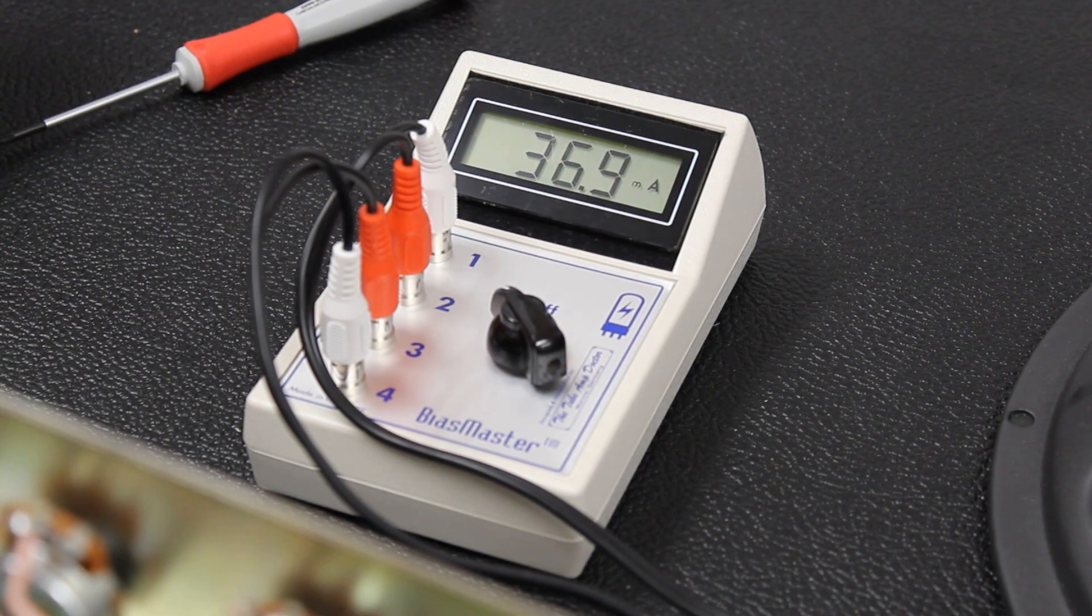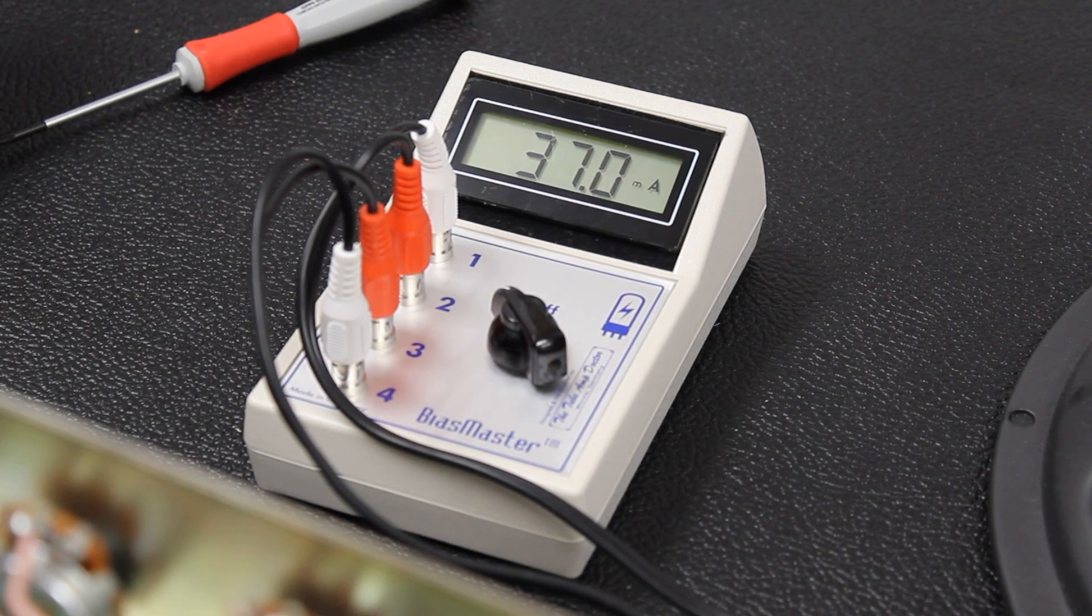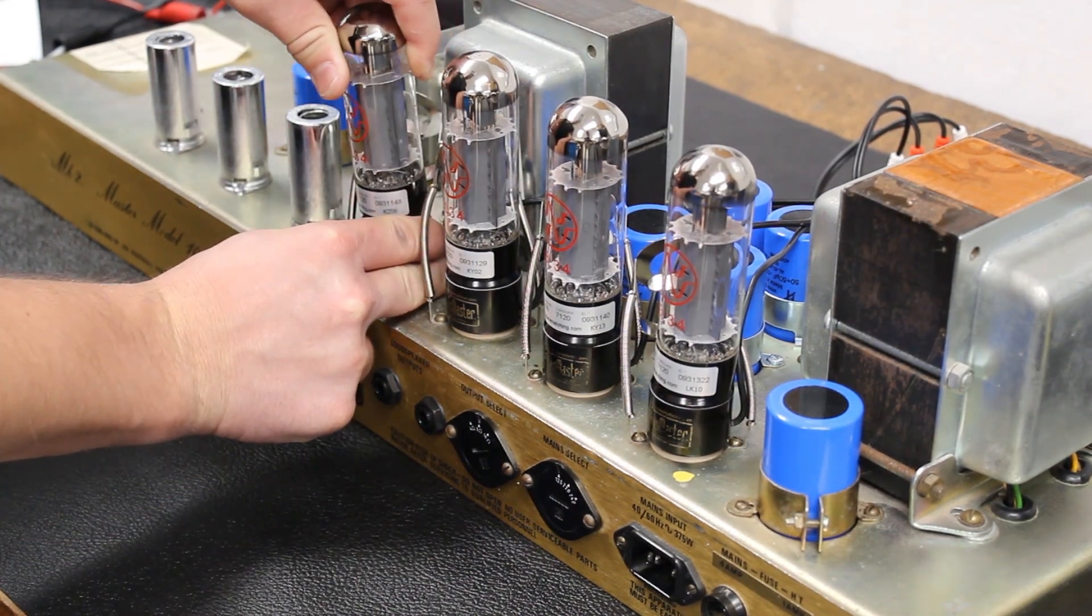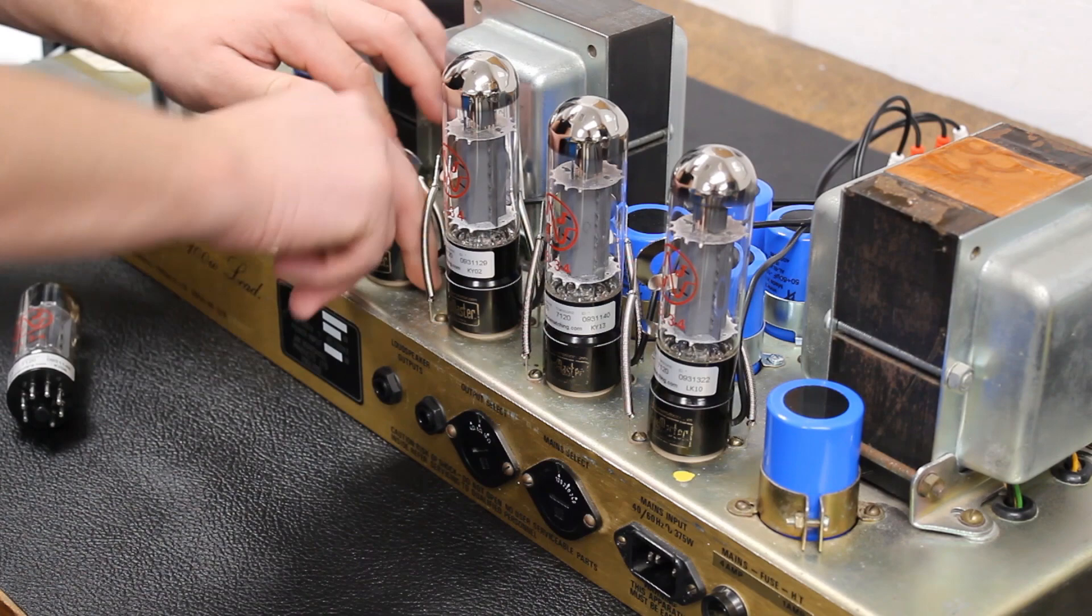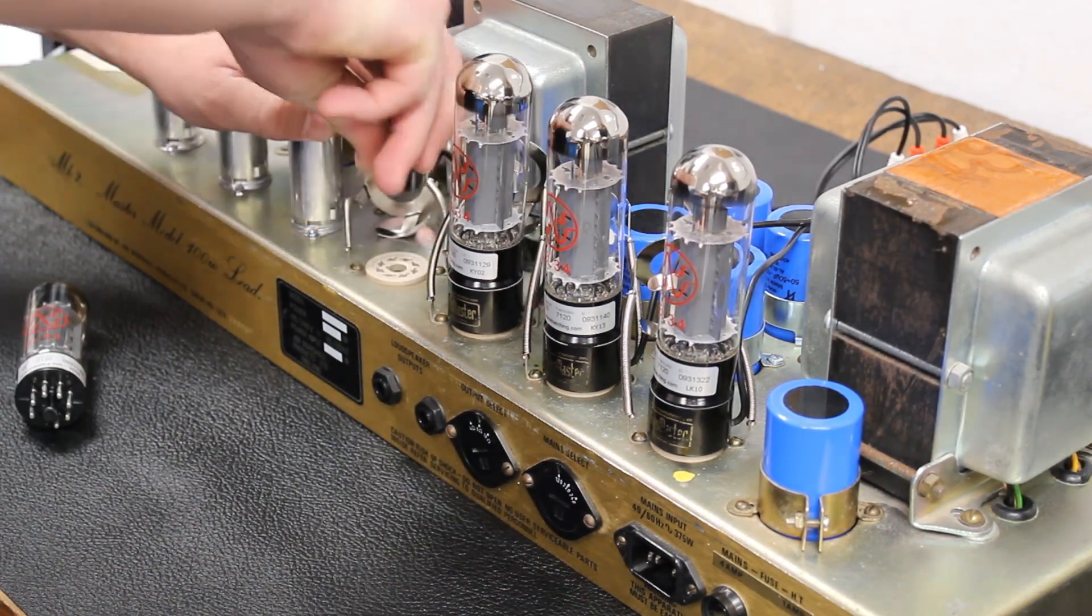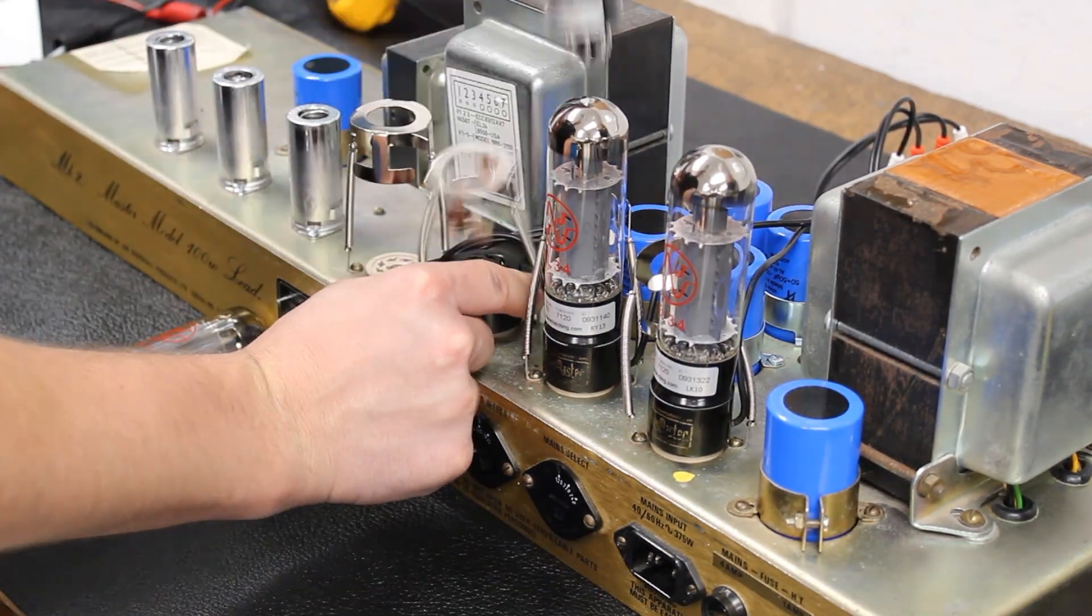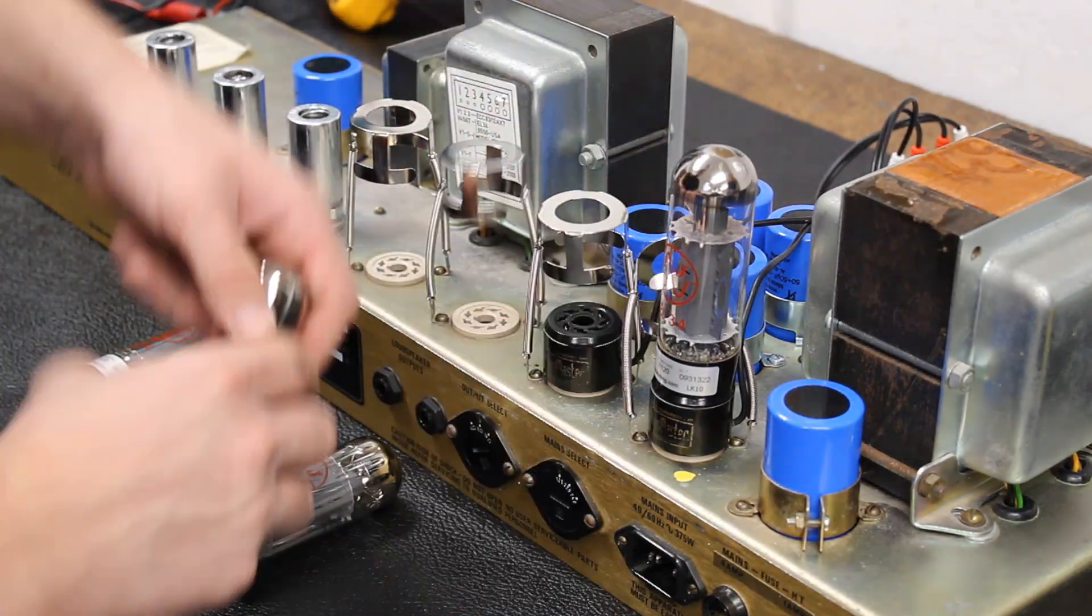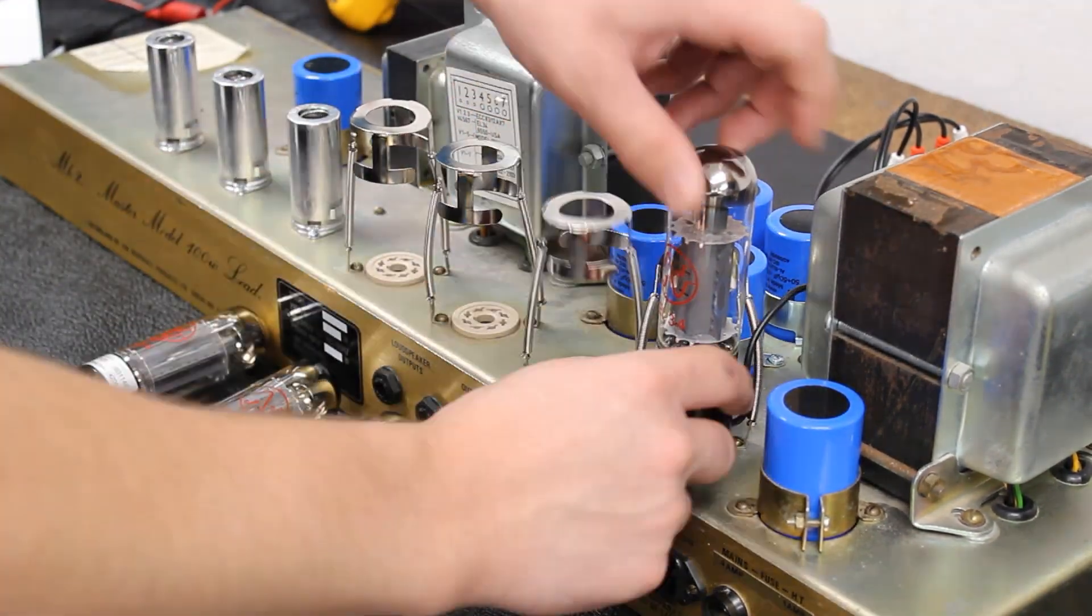Once you have your bias set, turn off and unplug your amp. Allow plenty of time for the tubes to cool before removing them. Once tubes are cool to the touch, you can remove them and take off the bias probes, taking care to replace the power tube in the same position that they were removed from.